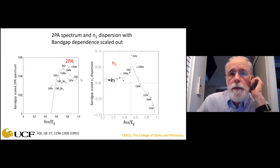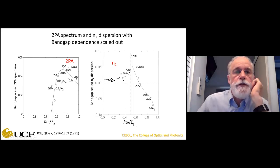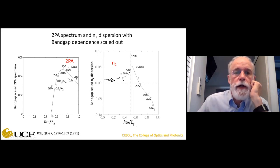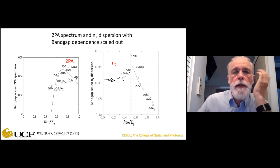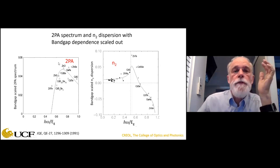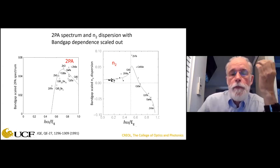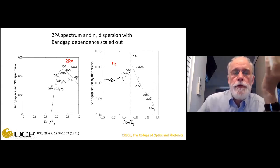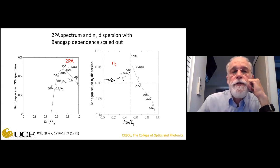Here is the degenerate two-photon absorption spectrum versus ℏω/E_gap. Linear absorption turns on at one; two-photon absorption turns on at one-half. This is a simple two-band parabolic band theory, and we've multiplied by the cube of the band gap for the two-photon absorption coefficient. Plotting many different materials on this scaled axis, you can see they follow this curve reasonably well.